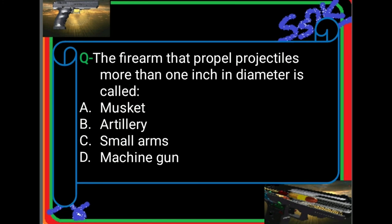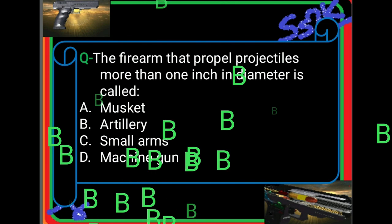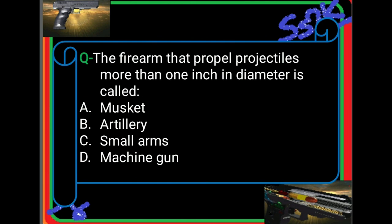Next question: the firearm that propels projectiles more than 1 inch in diameter is called — Letter A: musket, B: artillery, C: small arms, D: machine gun. The answer is artillery. Based on the classification by barrel size: if the projectile is more than 1 inch in diameter, it is artillery; if it is 1 inch or below, it is considered small arms. Those are the two classifications of firearms based on the size of the projectile they propel.